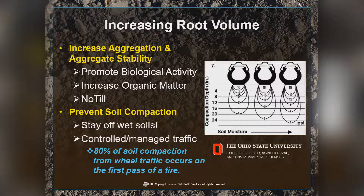As we increase aggregation and aggregate stability, that's a result of biological activity — bacteria and fungi in the soils forming these aggregates. Where you have really good aggregation, you'll have increased organic matter, and this occurs much faster under no-till conditions. Tillage breaks up these aggregates and forms very small microaggregates that seal off.